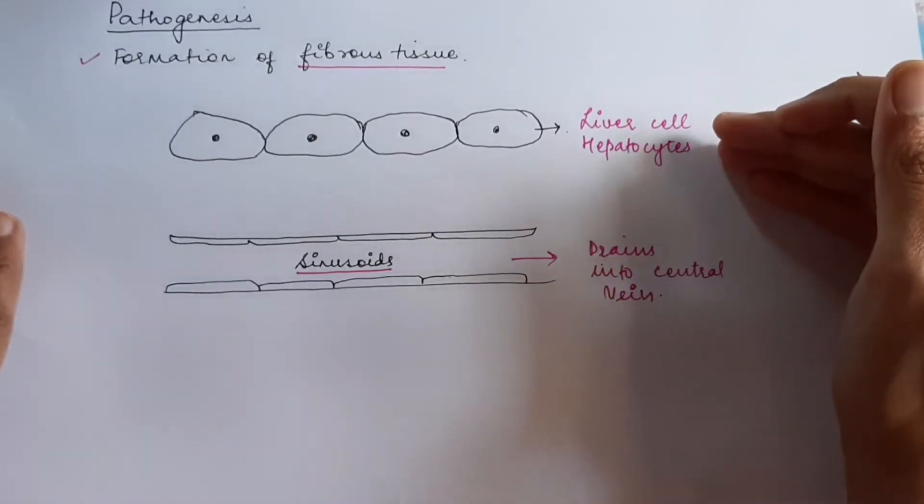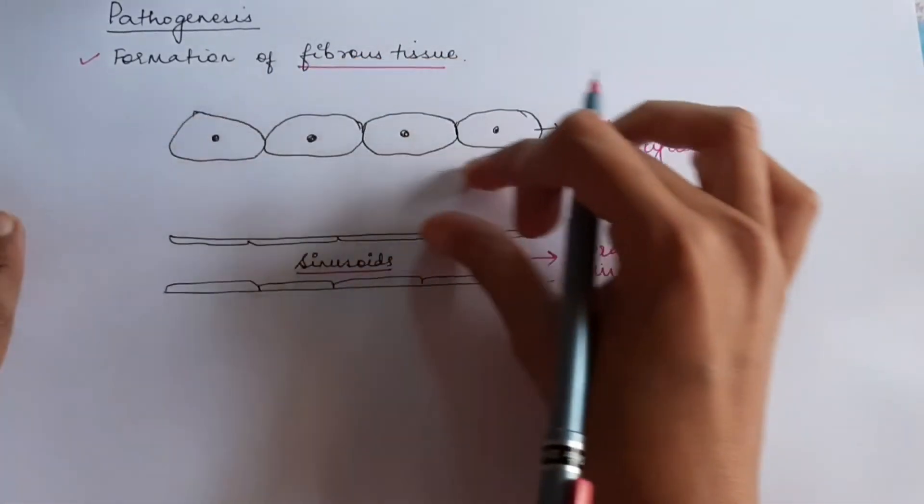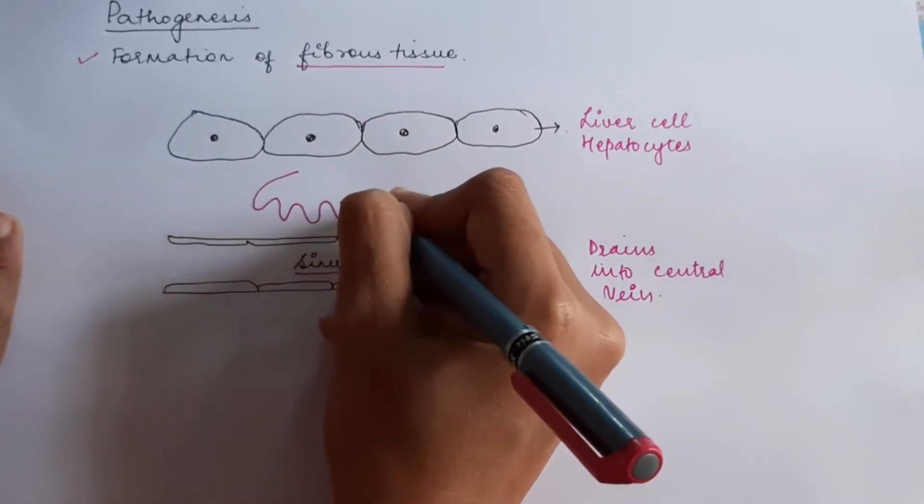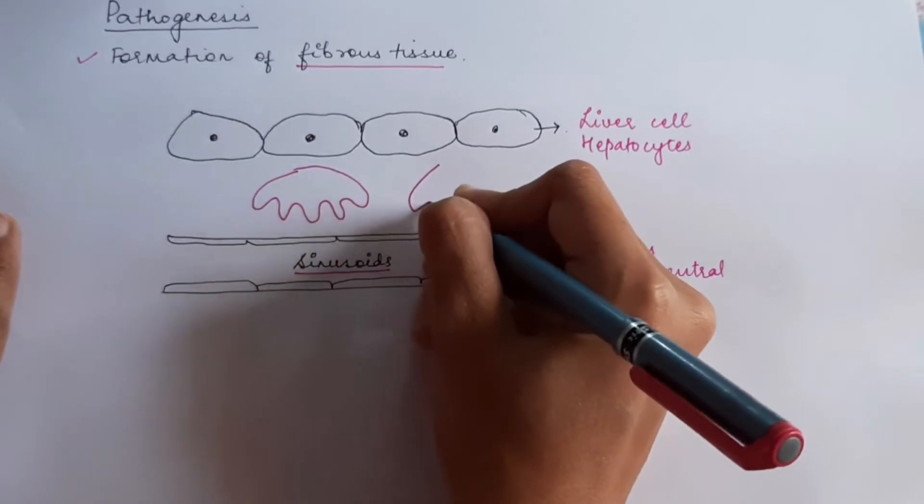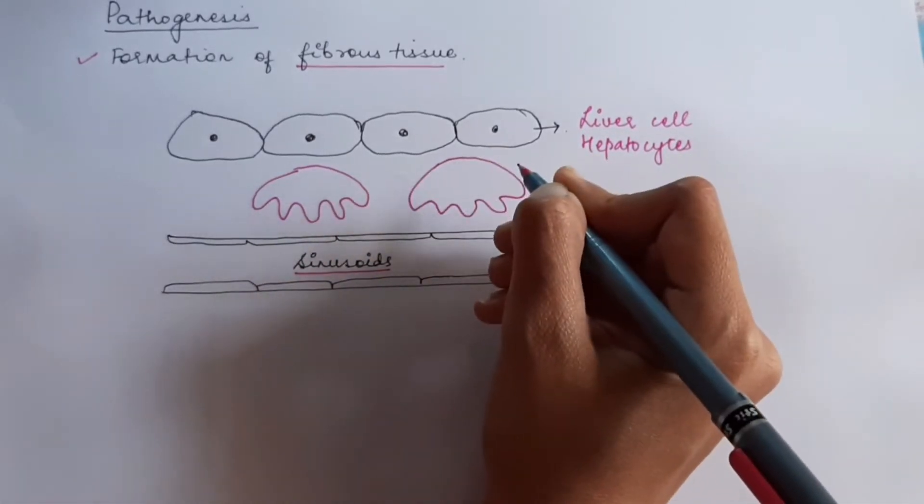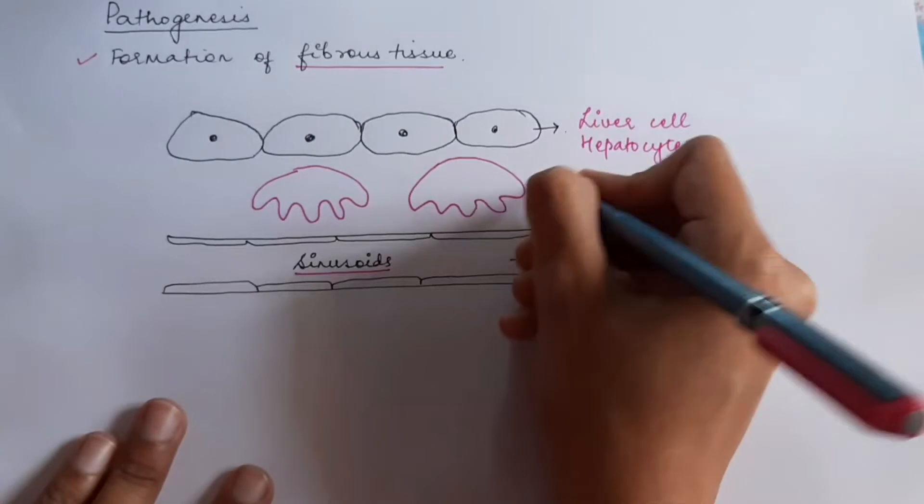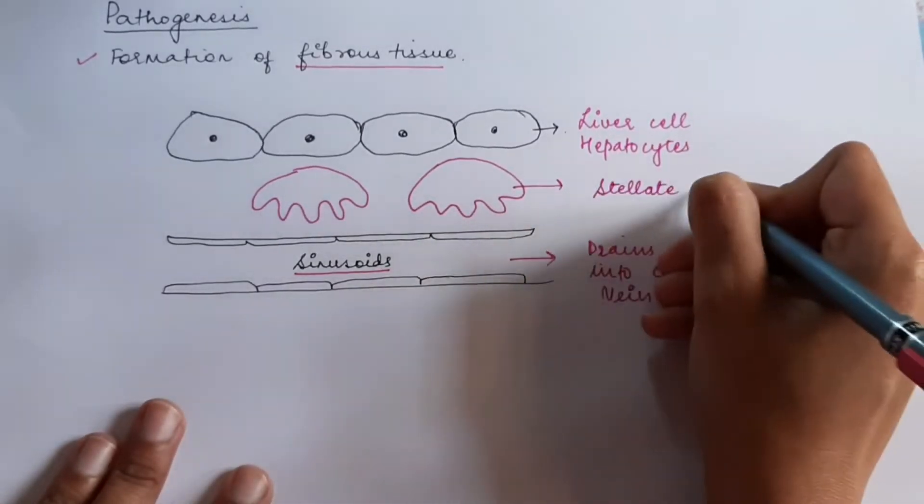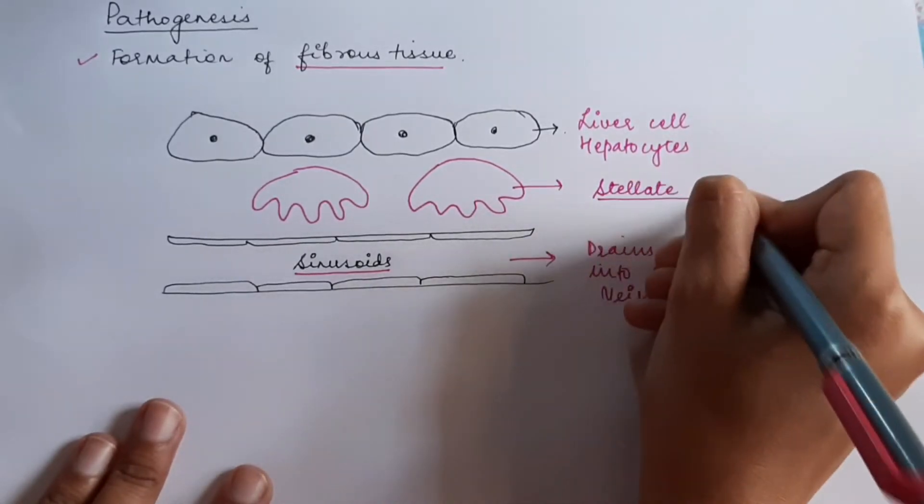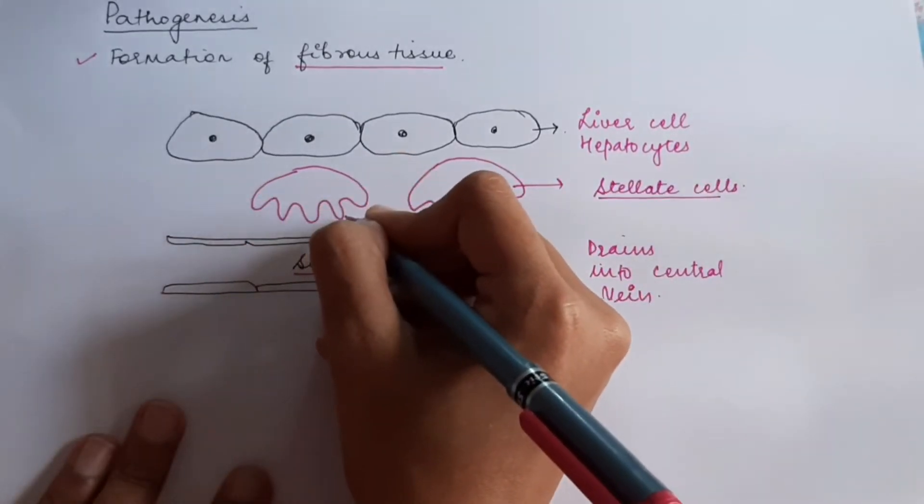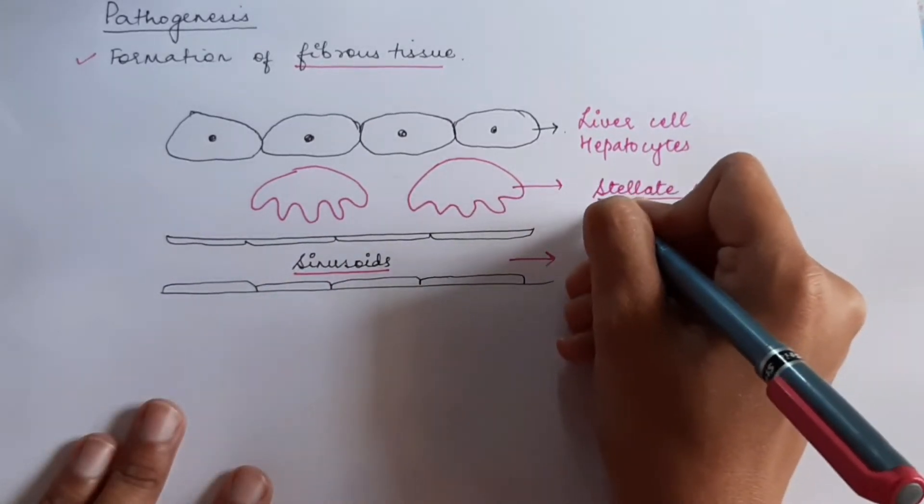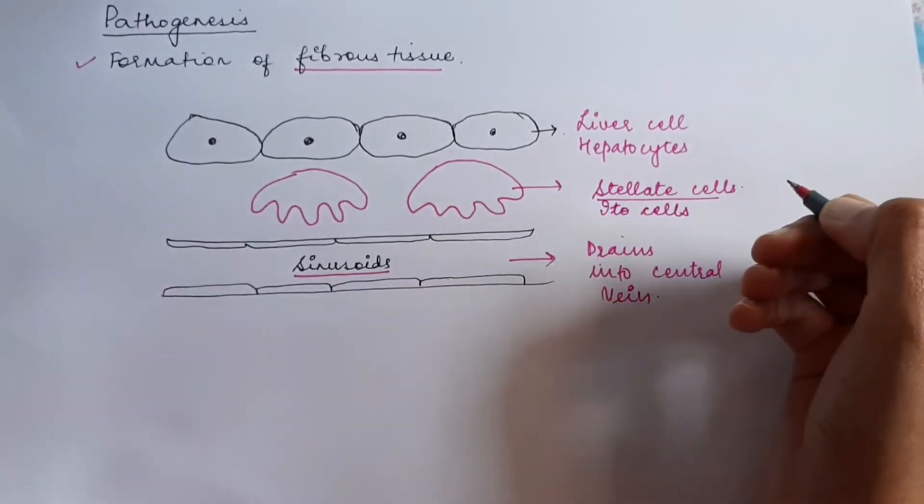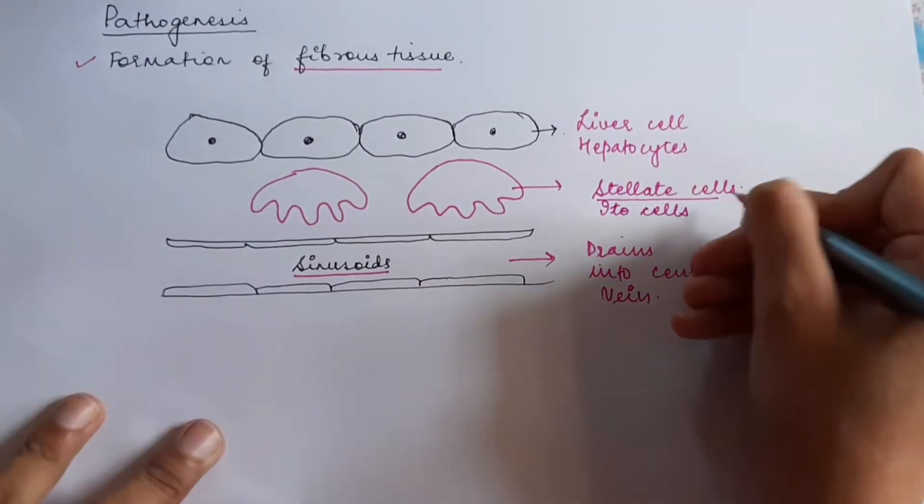Between the hepatocytes and the sinusoid, there is some space in which cells are present. These cells are called stellate cells. Stellate means star-like in shape. They have a zigzag sort of shape. The other name is Ito cells, or perisinusoidal cells.